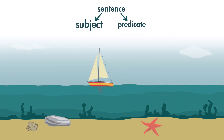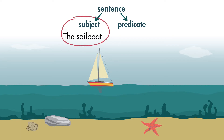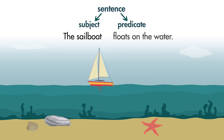The subject tells who or what the sentence is about. We are writing a sentence about a sailboat. The sailboat is the subject. The predicate is the second part of the sentence. It tells what the subject is or does in the sentence. Floats on the water is the predicate.